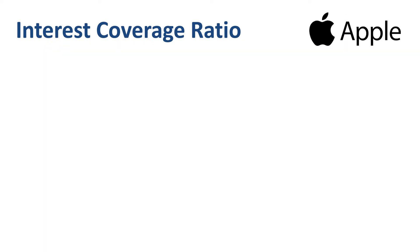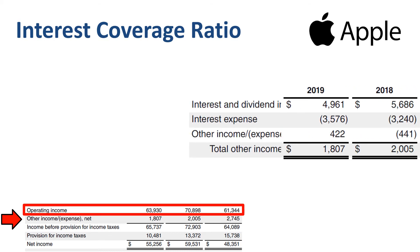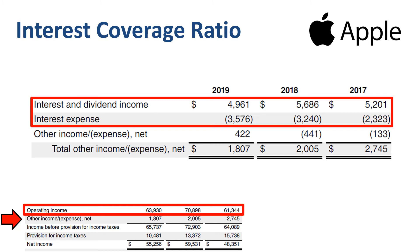Reviewing Apple's income statement, we find plenty of operating income — $60 to $70 billion per year — but no line item for interest expense. Apple does have interest expense, but it is reported as part of the other income and expense line. Interest and dividend income is far bigger than interest expense, so we cannot calculate the interest coverage ratio. Apple has such a strong financial position that the interest coverage ratio is not a meaningful metric — and neither is a liquidity metric like the current ratio.